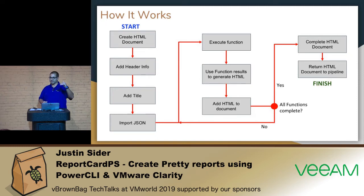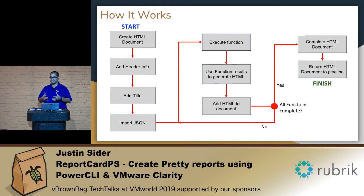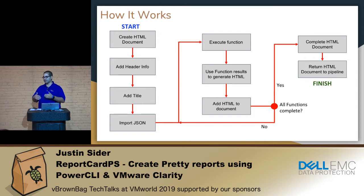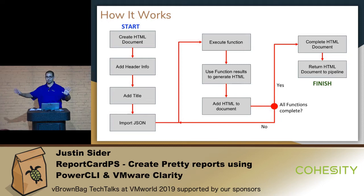So we create the HTML document, we add the header information, add a title as you need it, and then we import the JSON from a manifest file. All these reports are going to be based on a manifest file, and we're going to walk through those sequentially. We go through each function, we execute it, we take the output of that function and put it into HTML, and then we add that HTML to that document in memory. Once the document's complete, we return that back to the pipeline. I'm not sending an email, I'm not writing it to file or any of that — that's up to you guys.